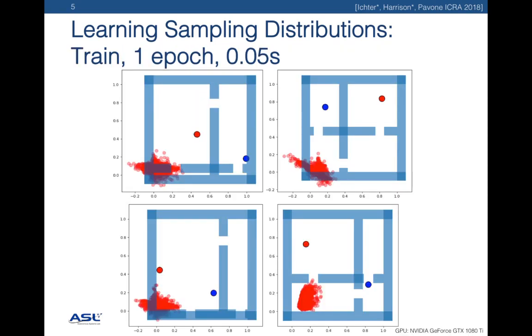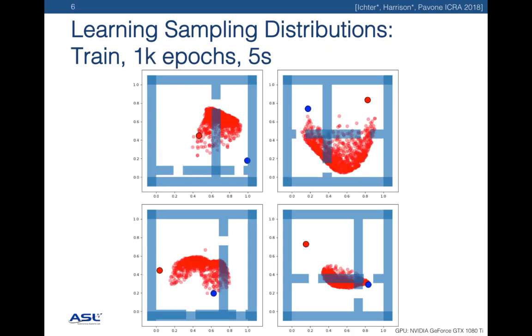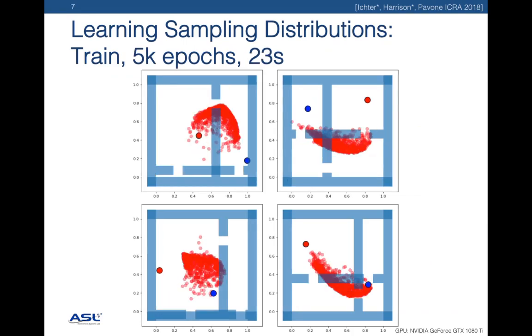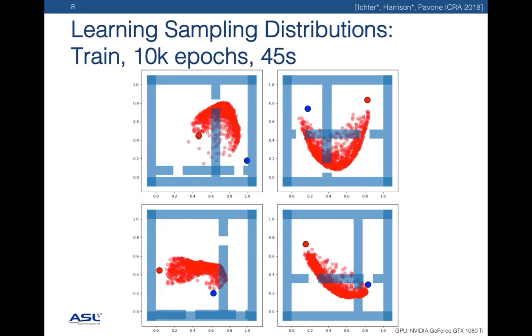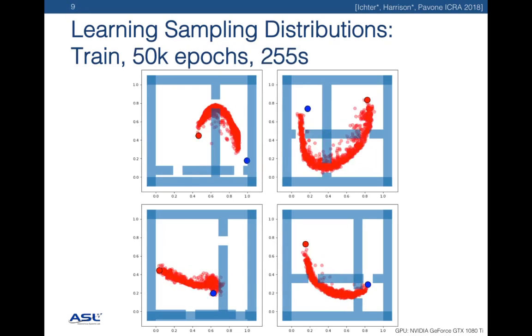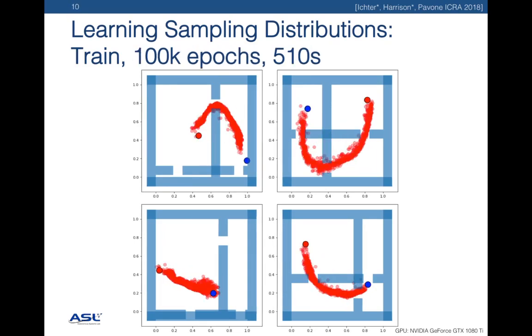The training data begins with a zero-mean Gaussian perturbed by the randomly initialized neural network. Quickly, the distribution converges to likely problem solutions. The entire training time takes less than 10 minutes.